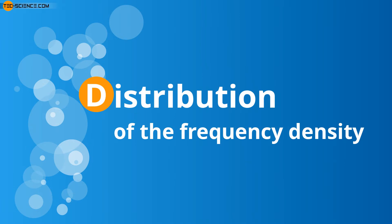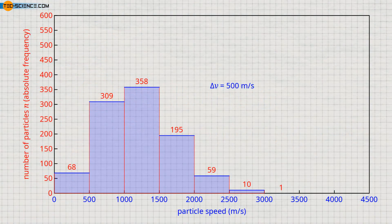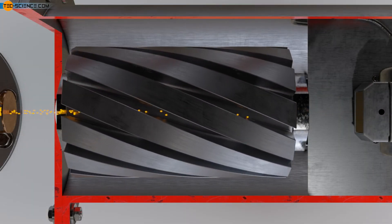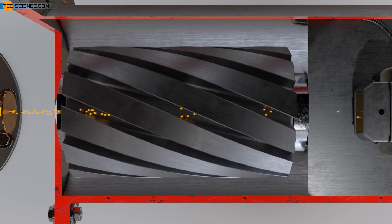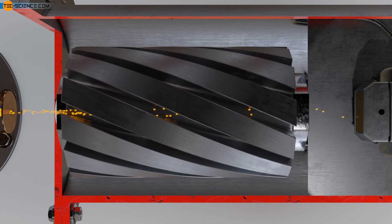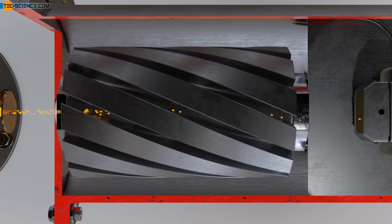For a more general representation of the speed distribution, it must first be noted that it is in principle impossible to directly assign a specific number of molecules to a certain speed. This is because the observed speed of a molecule will never correspond to a given value up to the last decimal place — you would not find a single molecule that exactly has this given speed. Even on the basis of the experimental setup, it is not possible to draw conclusions about the exact speed of the gas molecules, but only about speed ranges. This is due to the finite width of the grooves, which allows the speed to vary within certain limits.